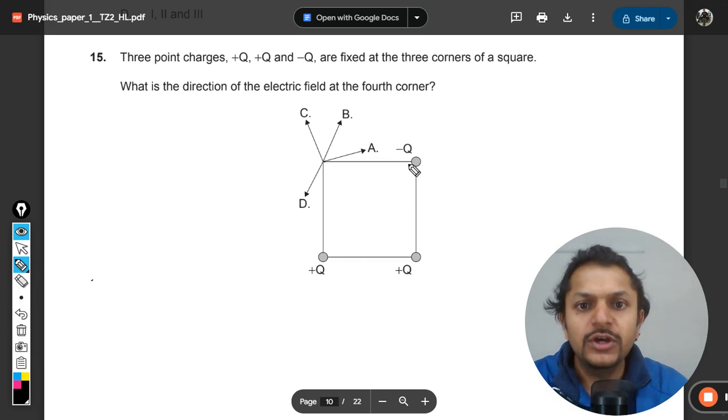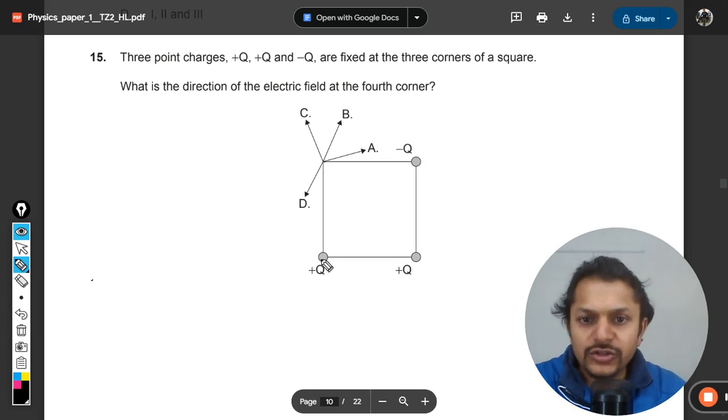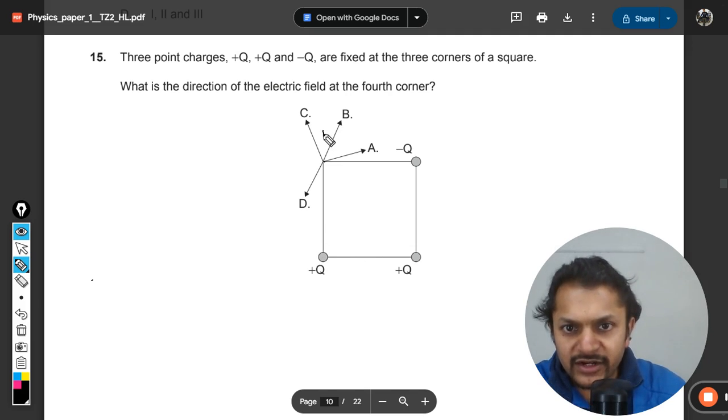But in the case of +Q and -Q, the magnitude will be the same, direction will be different. So let us first concentrate on these two charges. This charge will be producing an electric field away from it.